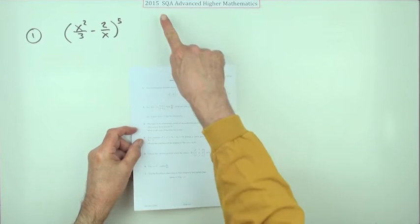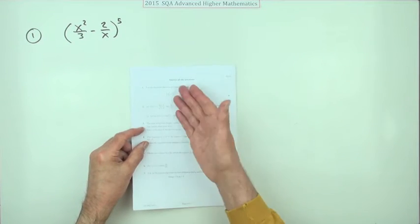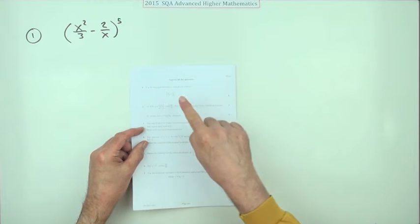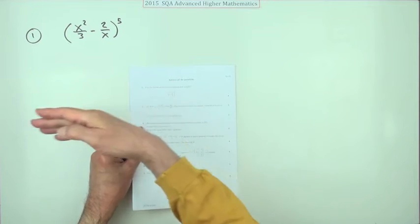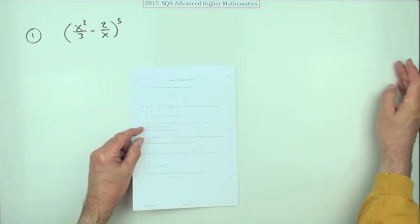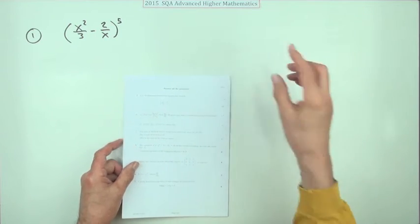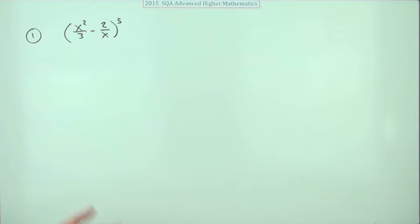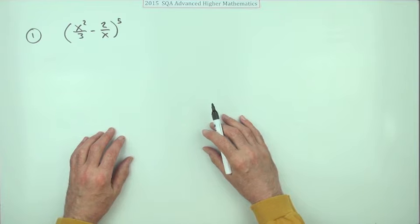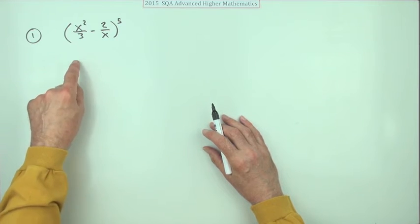Well, number one then from the 2015 Advanced Higher. The binomial expansion, but not the one you'd want - not the complete expand it out, which is going to be so tedious. You'd much rather they just find a particular term, but if that's what you get, you just have to get down with it.